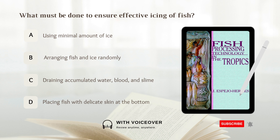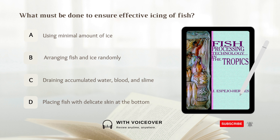What must be done to ensure effective icing of fish? A. Using minimal amount of ice. B. Arranging fish and ice randomly. C. Draining accumulated water, blood, and slime. D. Placing fish with delicate skin at the bottom. Answer: C. Draining accumulated water, blood, and slime.